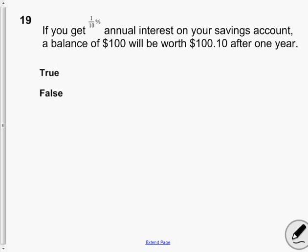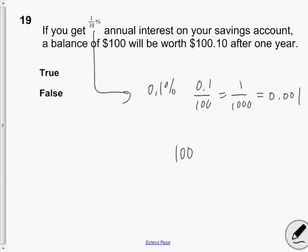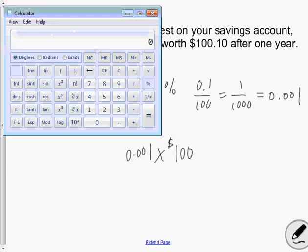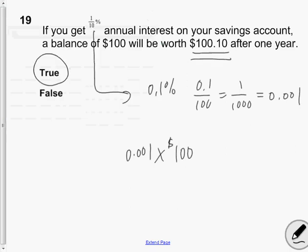Question 19: if you get a tenth of a percent annual interest on your savings account, a balance of one hundred dollars will be worth one hundred dollars and ten cents after one year. So let's just figure this out. A tenth of a percent is 0.1%, which is 0.1/100 which is 1/1000 which is 0.001. So if I take my one hundred dollars and I find a tenth of a percent of that, my interest rate will be a dime. This is true. After a year my investment will be worth a hundred dollars and ten cents.